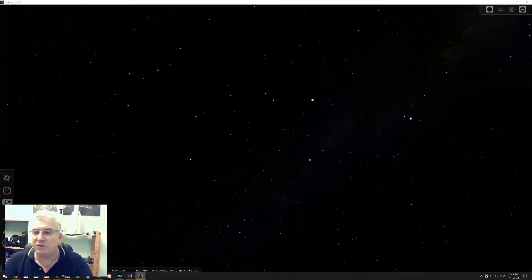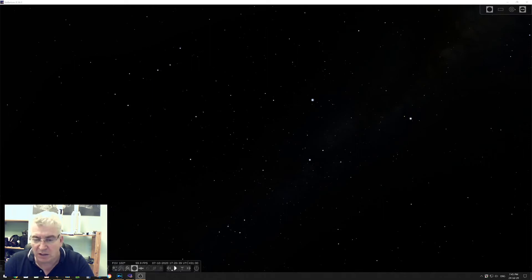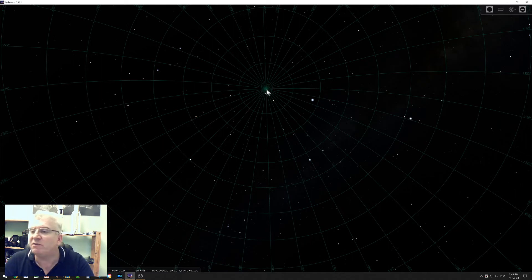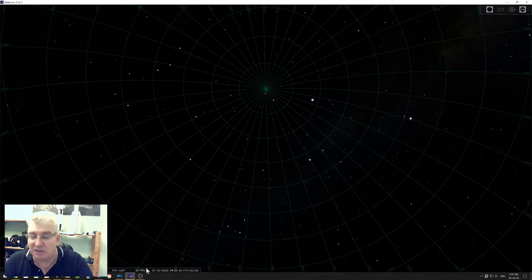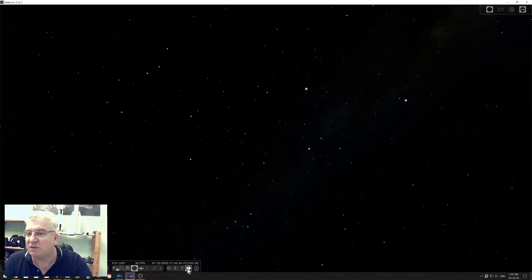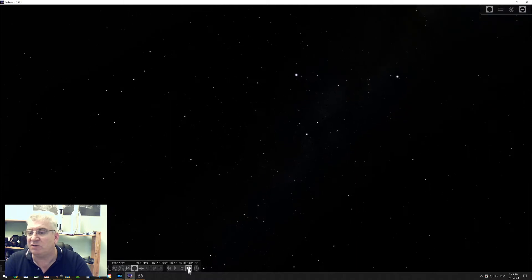I'm going to use Stellarium to show what happens in the sky in terms of what we see from the Earth's surface. Here I'm looking to the north. If I superimpose this grid, then this center focus here is straight up from a point on the south coast of the UK. I'm just going to accelerate time.